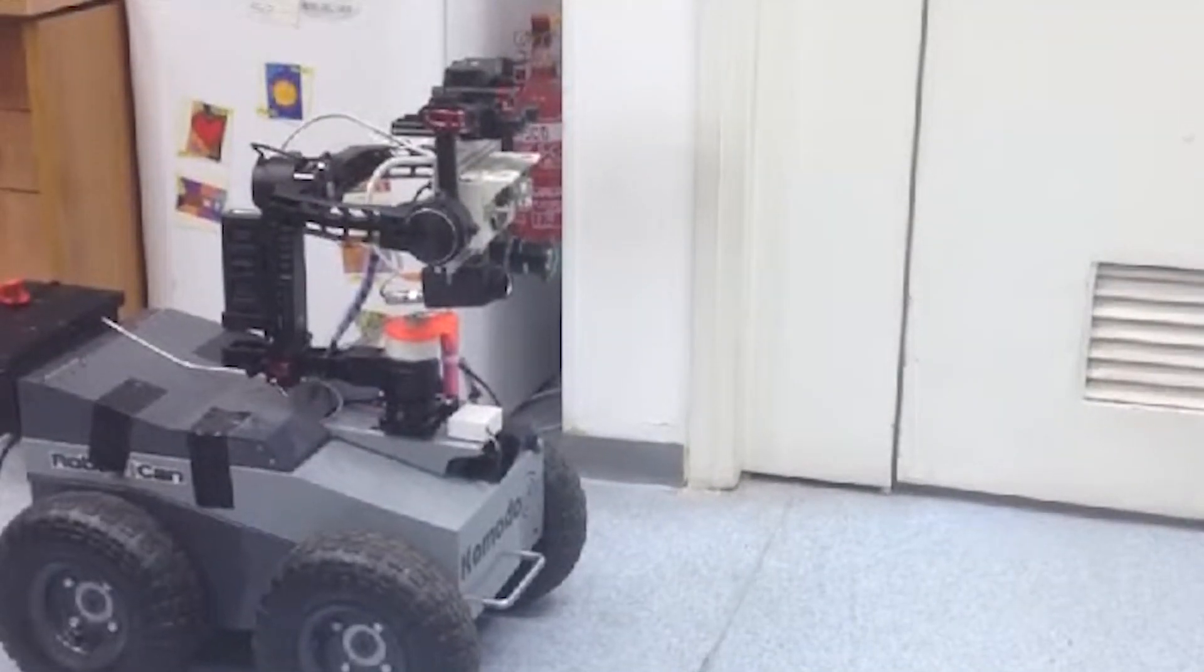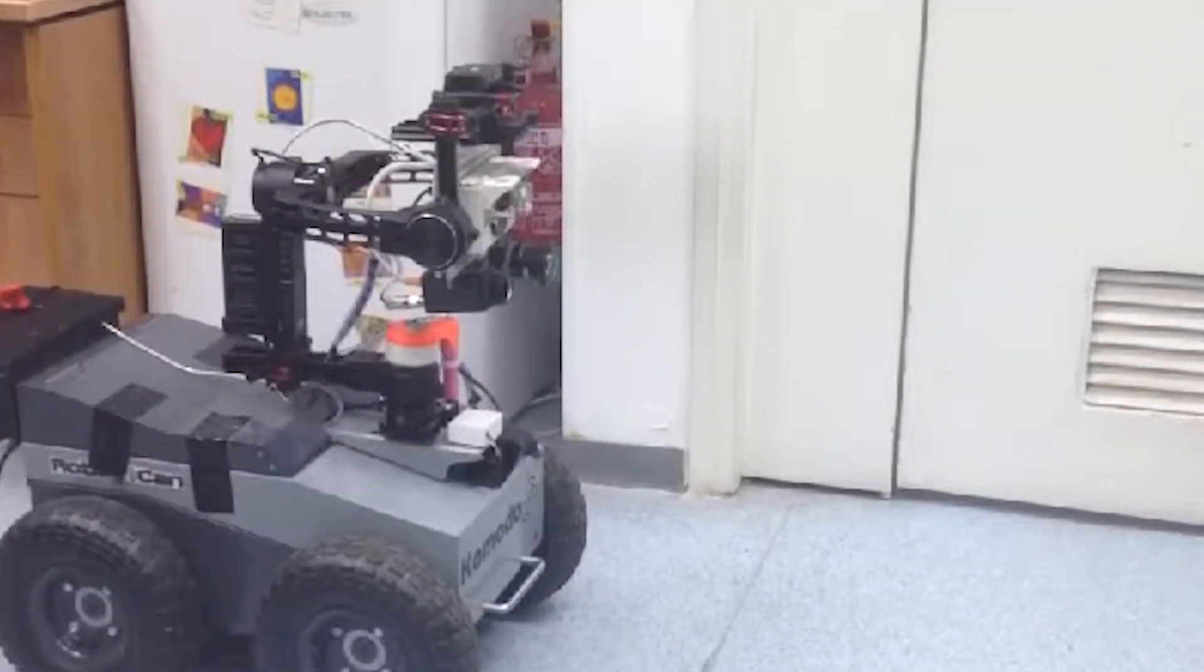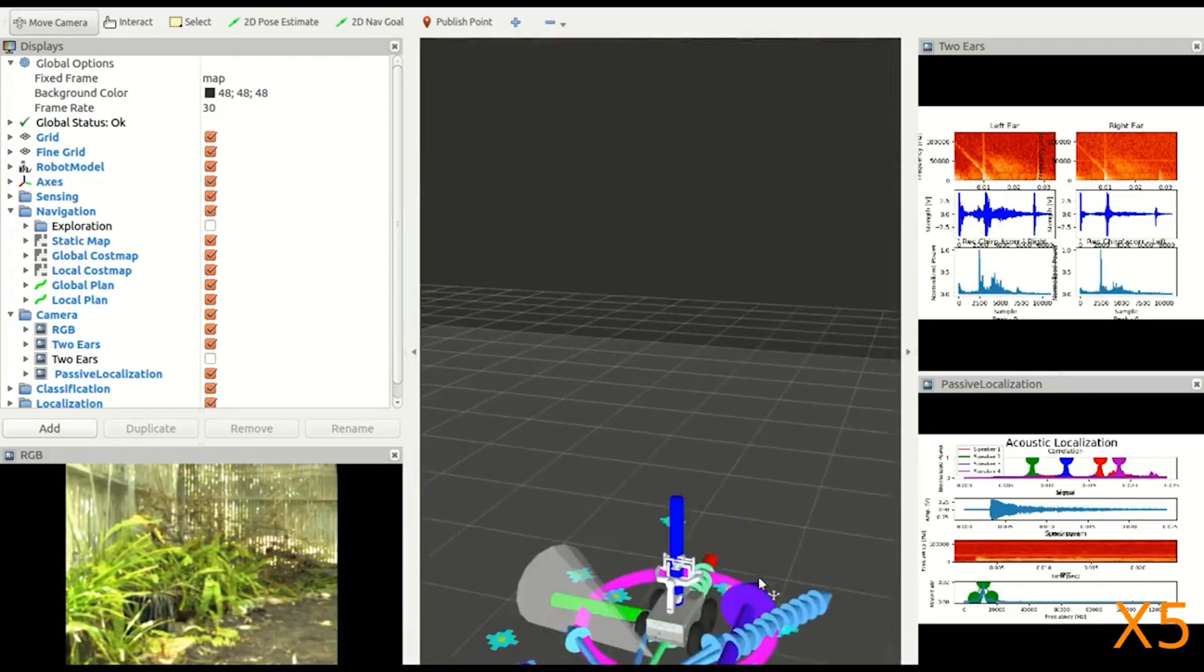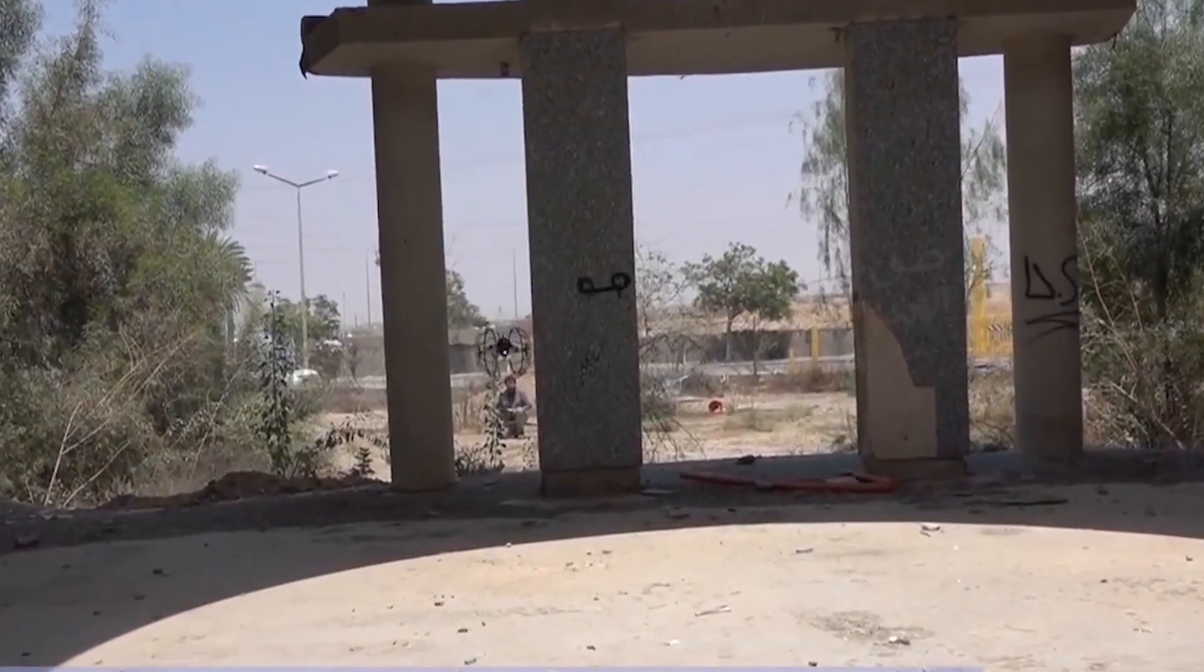When it comes to robots, science fiction has conditioned us to think of androids, bipedal machines approximating the human form. But the next generation of robots may be based on very different types of animals.